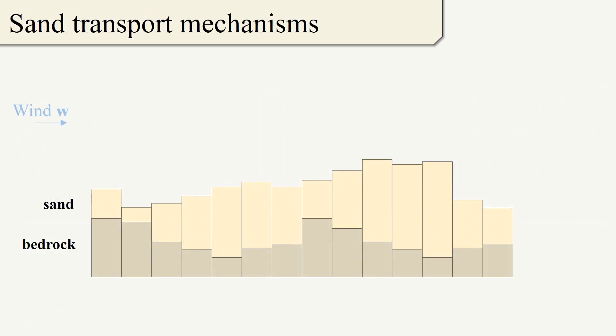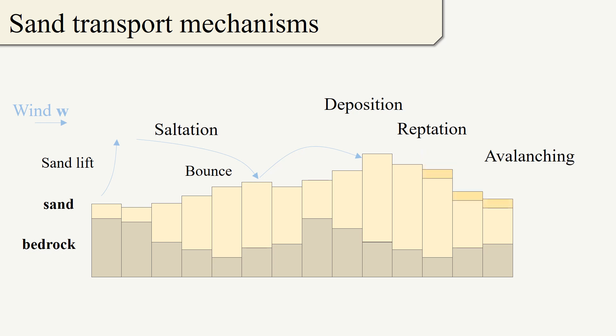Surface wind can lift sand slabs and transport them to other locations, a transport mechanism known as saltation. From this new location, the sand slab might bounce or deposit on top. Bounces and depositions can also displace sand to nearby cells, a movement known as reptation. Finally, if the slope is too steep, sand can avalanche to a stable position.